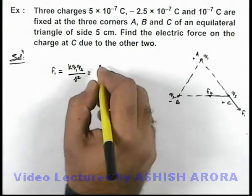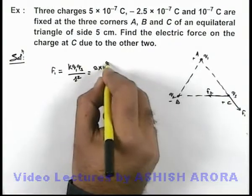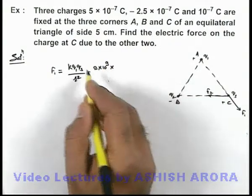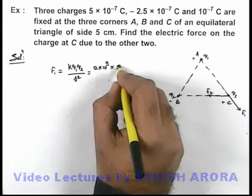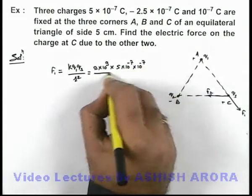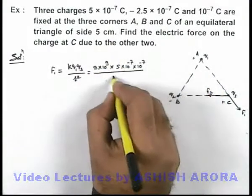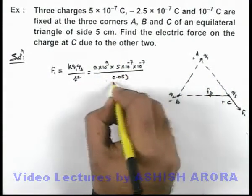If we substitute the values, then k is 9 × 10⁹ multiplied by q₁, which is 5 × 10⁻⁷, times 10⁻⁷, divided by the distance squared. Here distance is 5 centimeter, it is 0.05 meter, square of this.